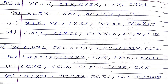Now arrange these in descending order — largest first, then smaller. Part A: CDXL = 440; CCCXXIX = 300+20+9 = 329; CCC = 300; CLXIX = 160+9 = 169; CLII = 150+2 = 152. These numbers arranged in descending order are: 440, 329, 300, 169, 152. Similarly, you have to solve parts B, C and D.